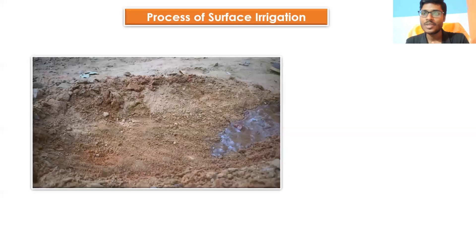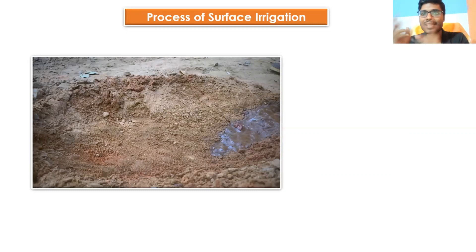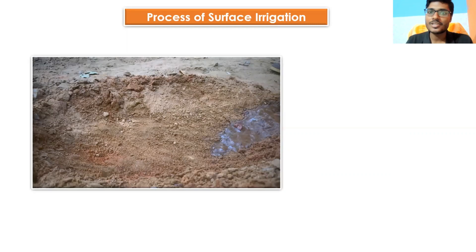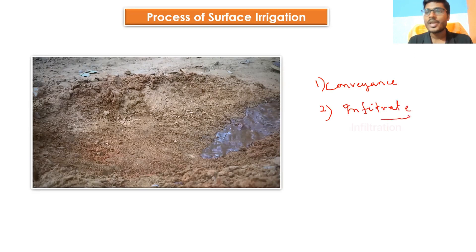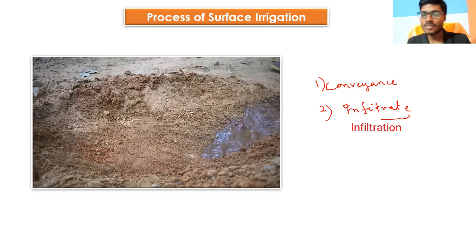Water is distributed by the force of gravity. During the process of surface irrigation, the soil surface acts as a conveyance surface as well as an infiltrating surface — it does two jobs. The first job is it acts as a conveyance surface, carrying water from one point to another. The second job is it also infiltrates water inside it.